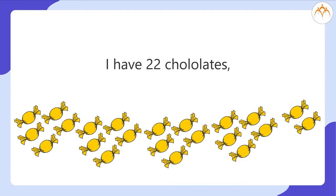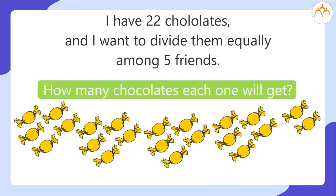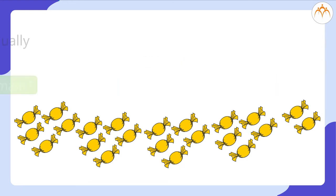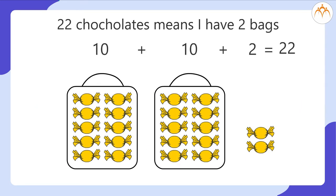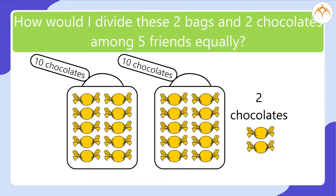That simply means I have 22 chocolates and I want to divide them equally among 5 friends. Then how many chocolates will each one get, and how many chocolates will remain? 22 chocolates means I have 2 bags, each bag with 10 chocolates and 2 loose chocolates. How would I divide these 2 bags and 2 chocolates among 5 friends equally?